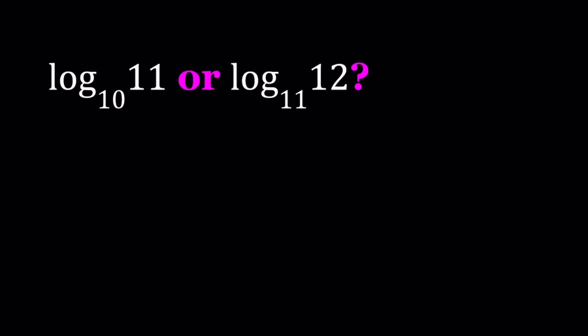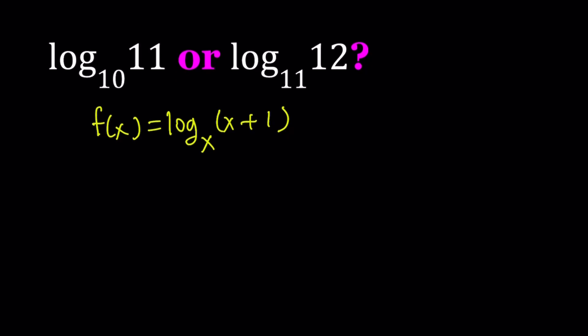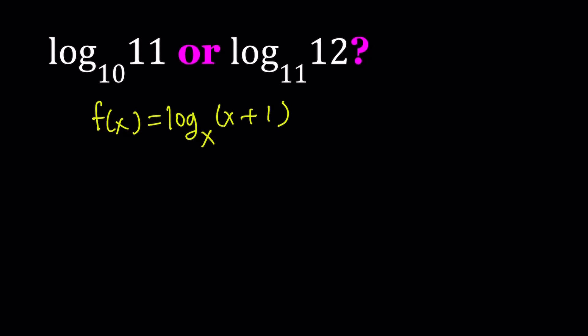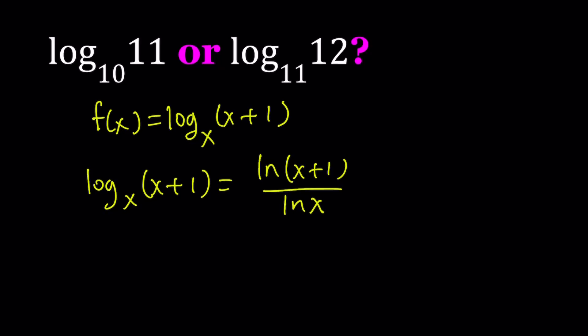First of all, let's take a look at the function f(x) = log(x+1) with base x. Obviously, when you replace x with 10 you're going to get the first number, and when you replace x with 11 in this function you're going to get the second number. So this will allow us to compare these numbers by approaching this problem from a functional sense. We're going to use the change of base formula to write this as ln(x+1) divided by ln(x), and let's call this f(x).